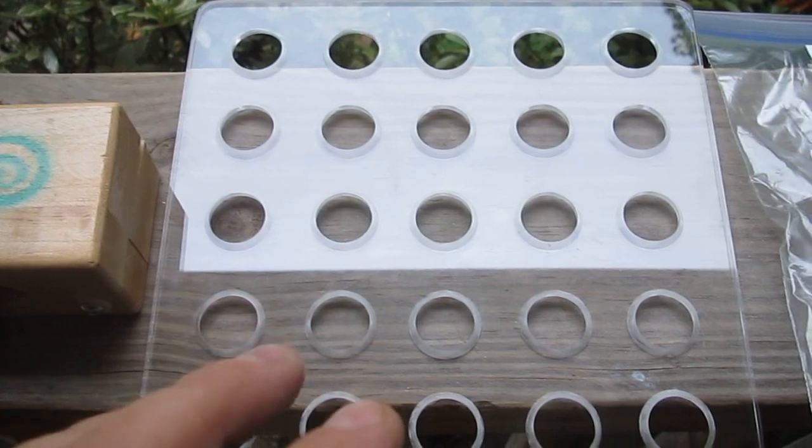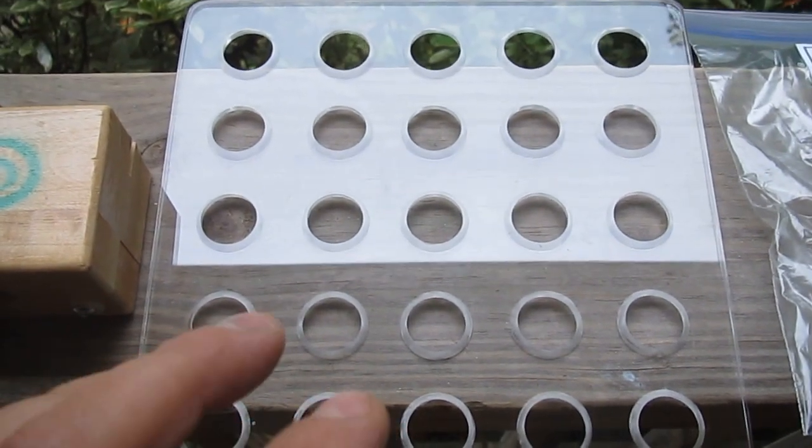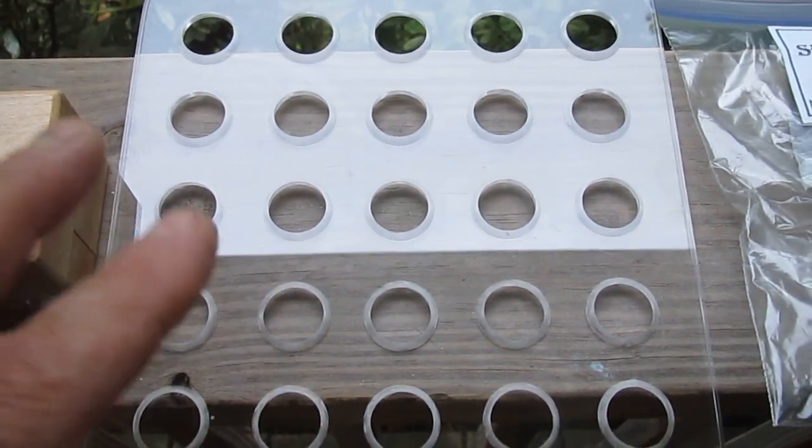You get an acrylic grid board which holds your 25 trimmed shells upright and keeps the wax from running down the sides.